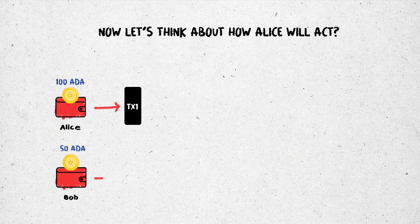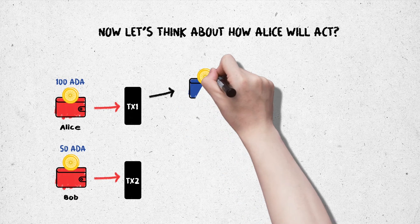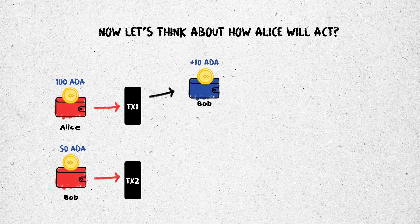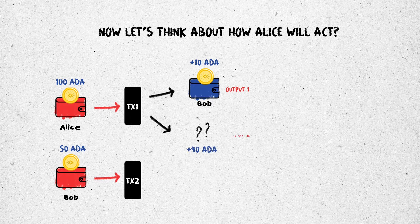Now, let's think about how Alice will act. Alice wants to send 10 ADA to Bob, so the output is 10 ADA. What about the excess money of Alice? When Alice wants to get her excess money, she will create a second output of 90 ADA. The whole UTXO of 100 ADA will be consumed. Bob will receive the new transaction of 10 ADA and Alice will receive a change of 90 ADA.